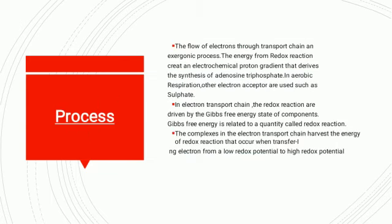The flow of electrons through the electron transfer chain is an exergonic process. The energy from the redox reaction creates an electrochemical proton gradient that drives the synthesis of adenosine triphosphate. In aerobic respiration, other electron acceptors are used, such as sulfate. In the electron transfer chain, the redox reaction is driven by the Gibbs free energy state of components.